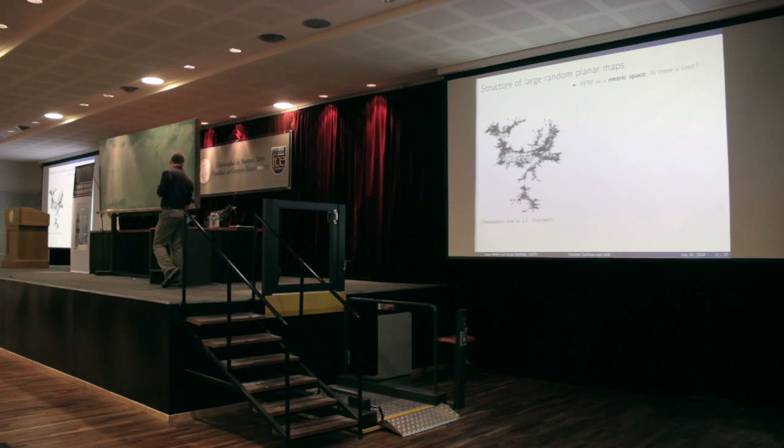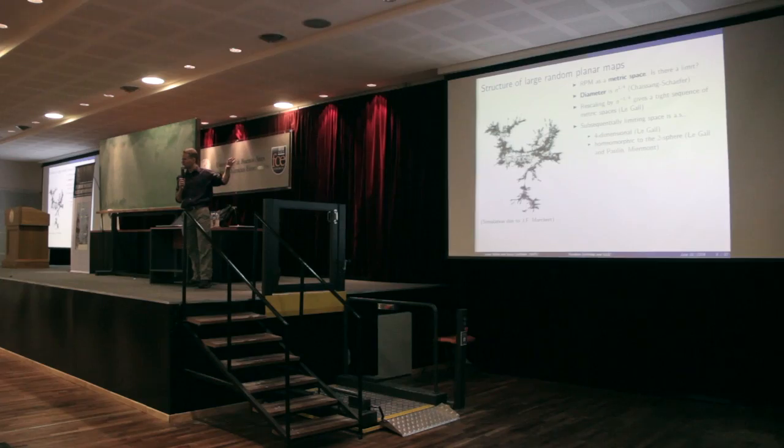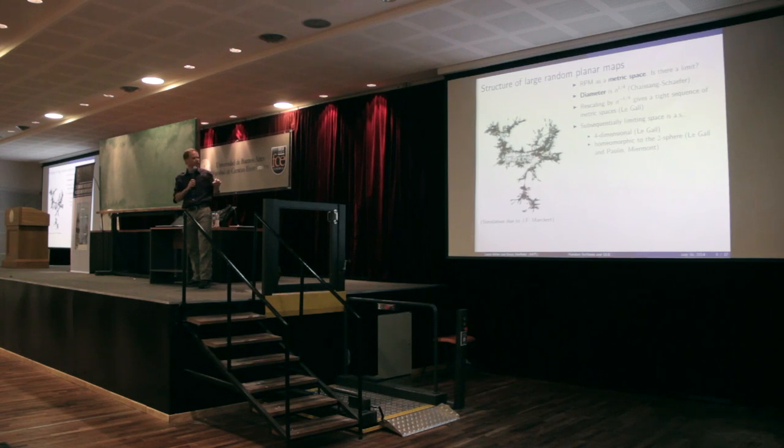Two-dimensional quantum gravity is the study of two-dimensional random surfaces. This thing is a metric space, and it's known — from work of Legall, Schaeffer, Miermont, and others — that if you look at this as a random metric space and take the limit as the number of squares grows, it converges in the Gromov-Hausdorff topology to a continuum random metric space, which was shown to be homeomorphic to the two-sphere. This metric space limit is sometimes called the Brownian map.